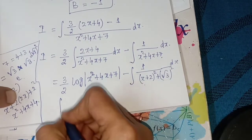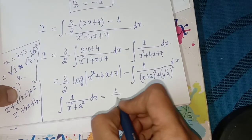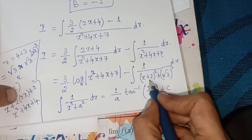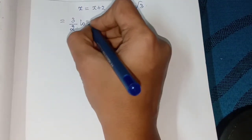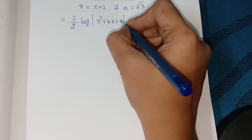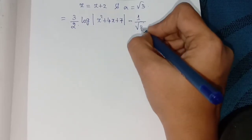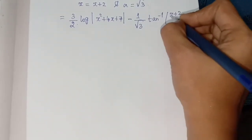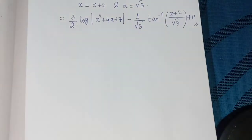Use the formula: integral of 1/(x² + a²) dx equals (1/a) tan⁻¹(x/a) + C. Here x becomes (x + 2) and a becomes √3. So the answer is: 3/2 into log modulus of (x² + 4x + 7) minus 1/√3 tan⁻¹((x + 2)/√3) plus C. Final answer.